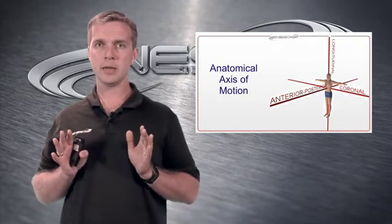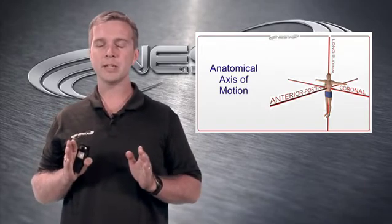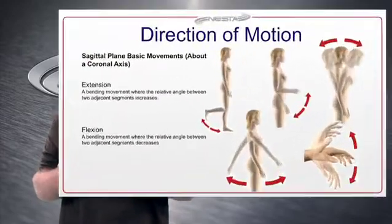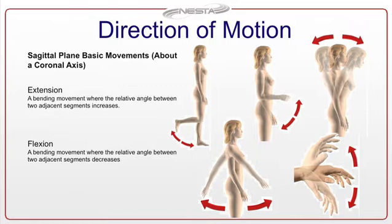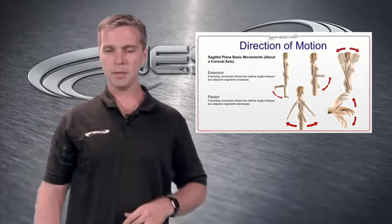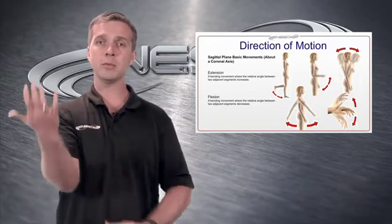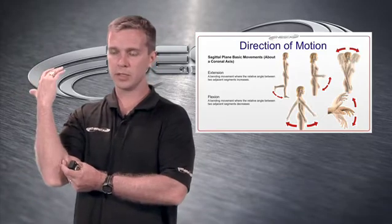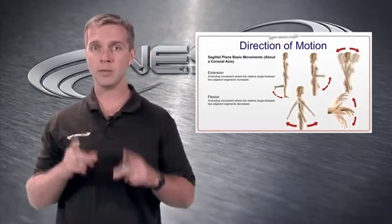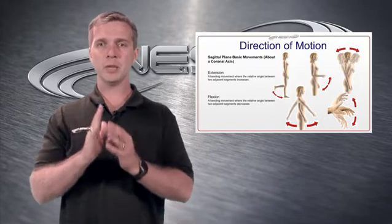Any movement within the sagittal plane is called either flexion or extension. Extension is a straightening movement where the relative angle between two adjacent segments increases — like the elbow or knee extending. Flexion is a bending movement where the relative angle between two segments decreases. There's an animation that goes over all of these in greater detail. That was sagittal plane movement about the coronal axis.